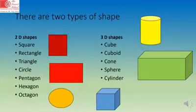There are two types of shape: 2D shapes and 3D shapes. 2D shapes are square, rectangle, triangle, circle, pentagon, hexagon and octagon. 3D shapes are cube, cuboid, cone, sphere and cylinder.